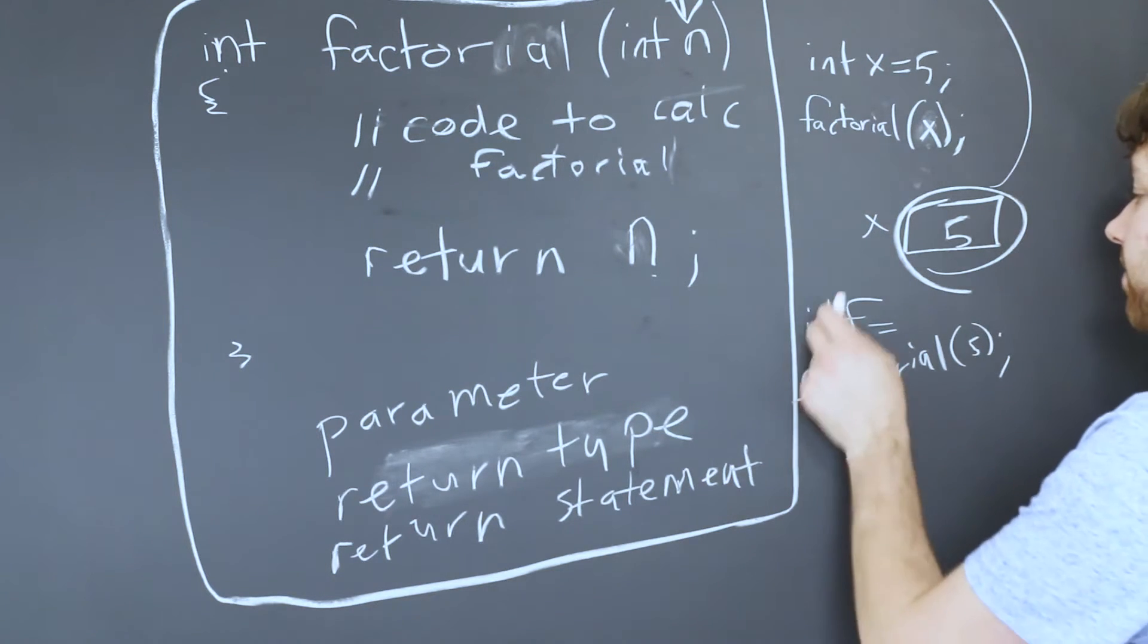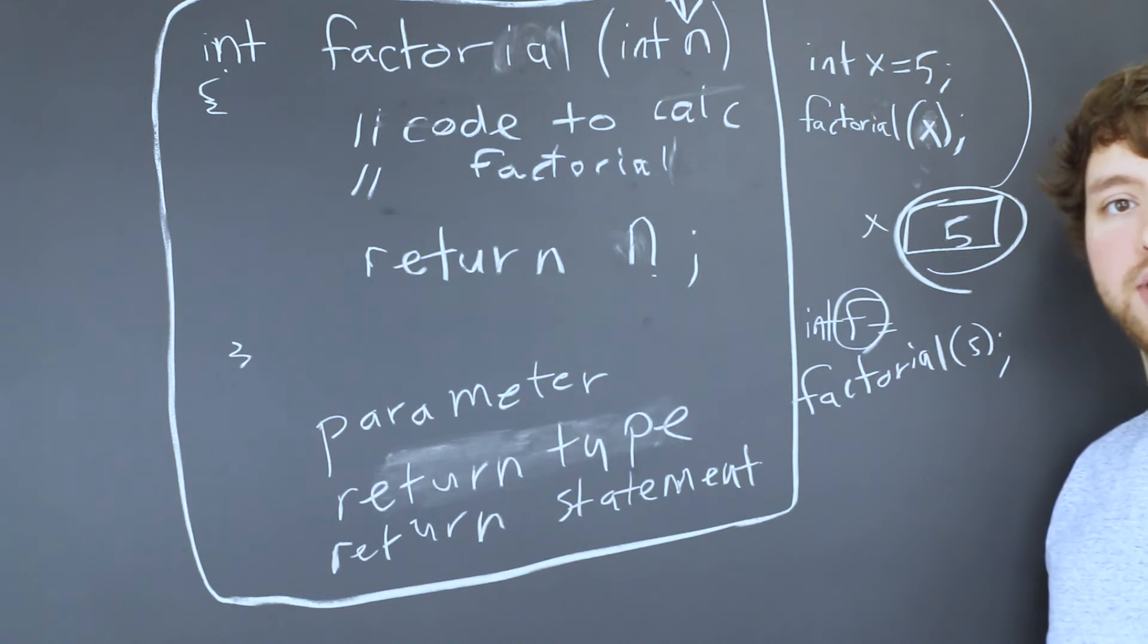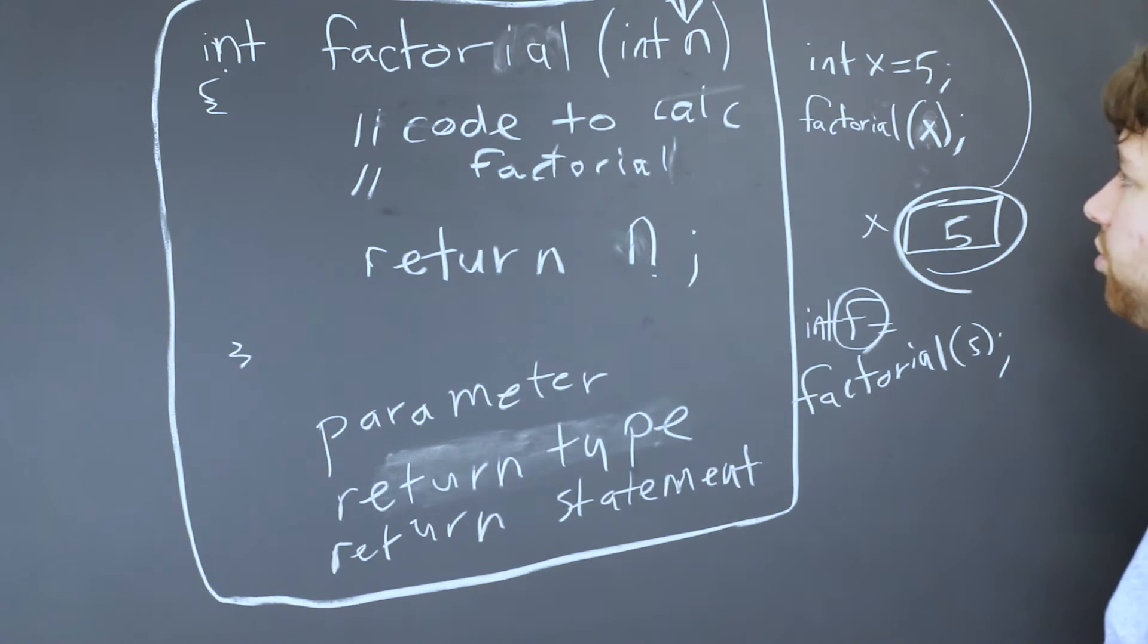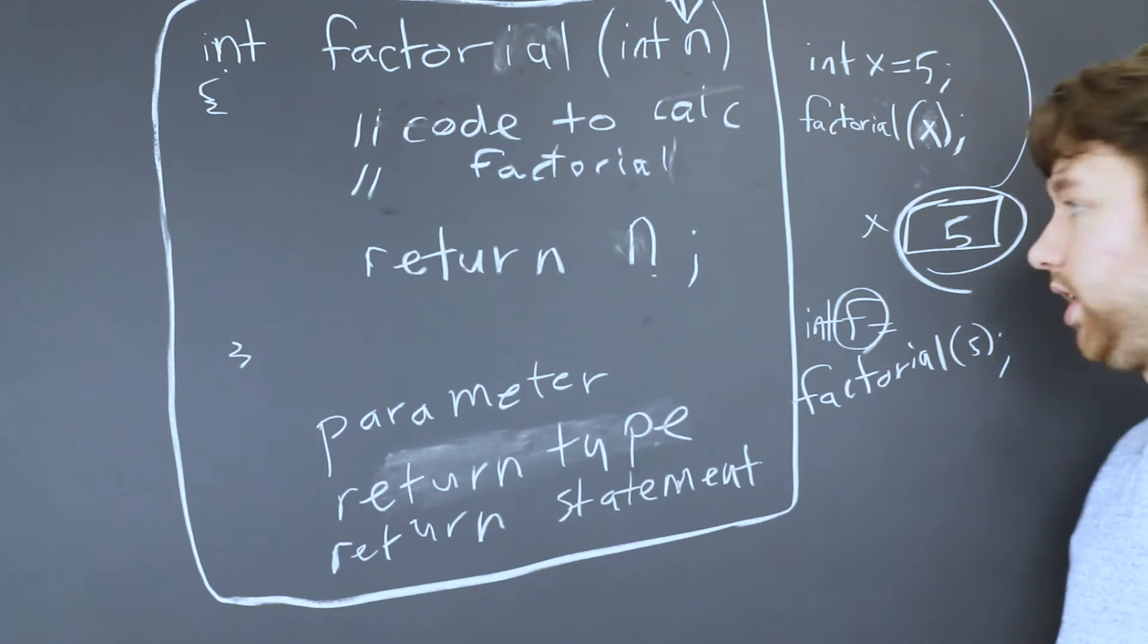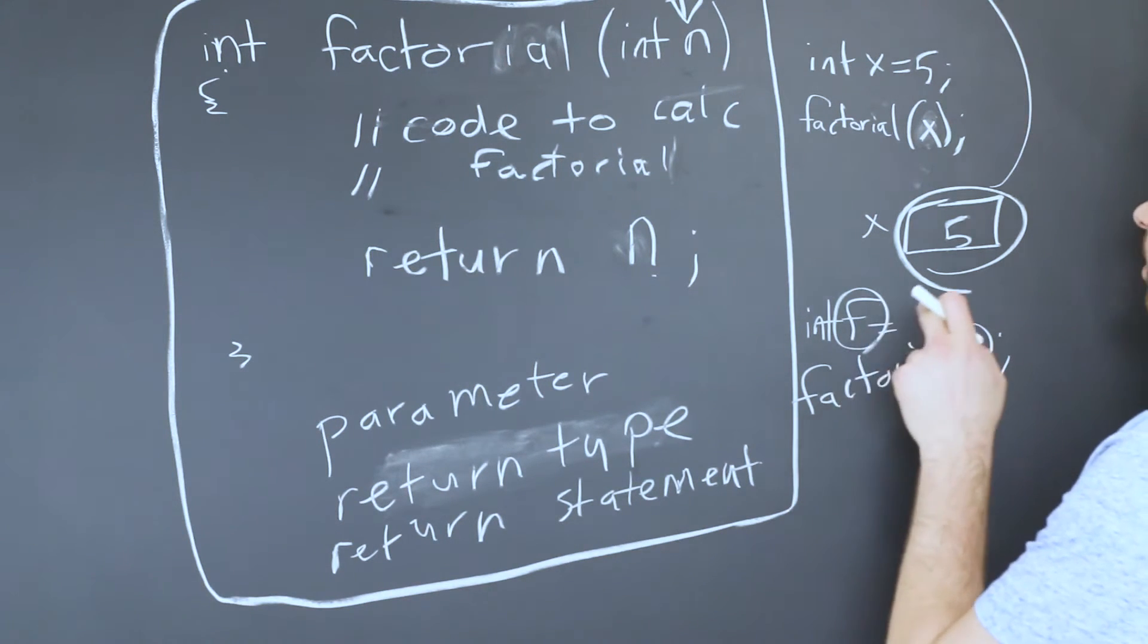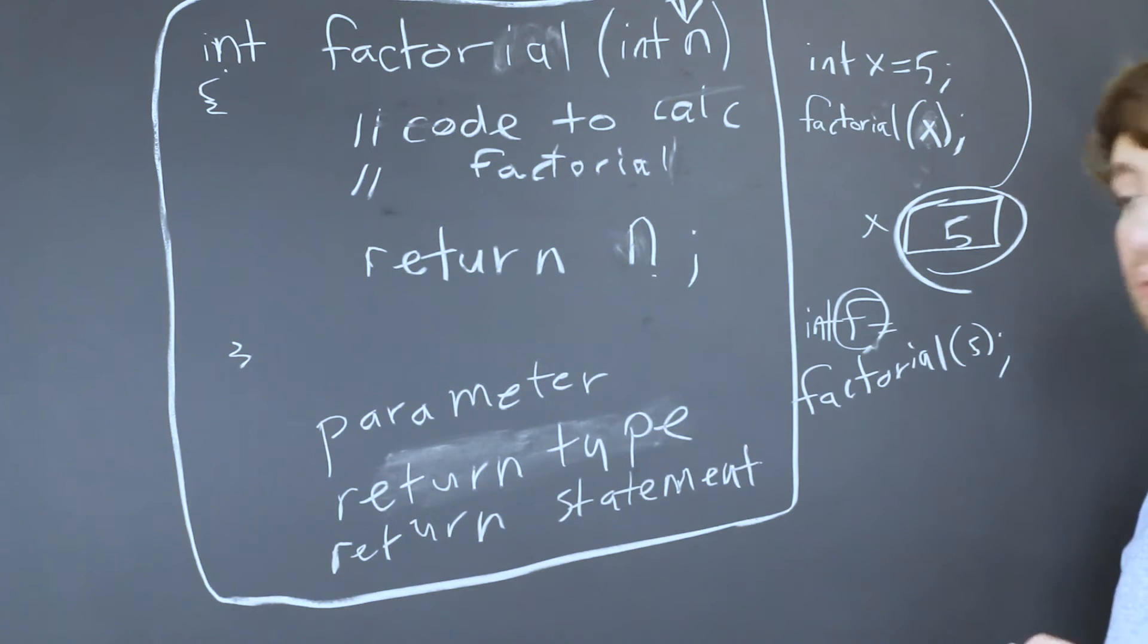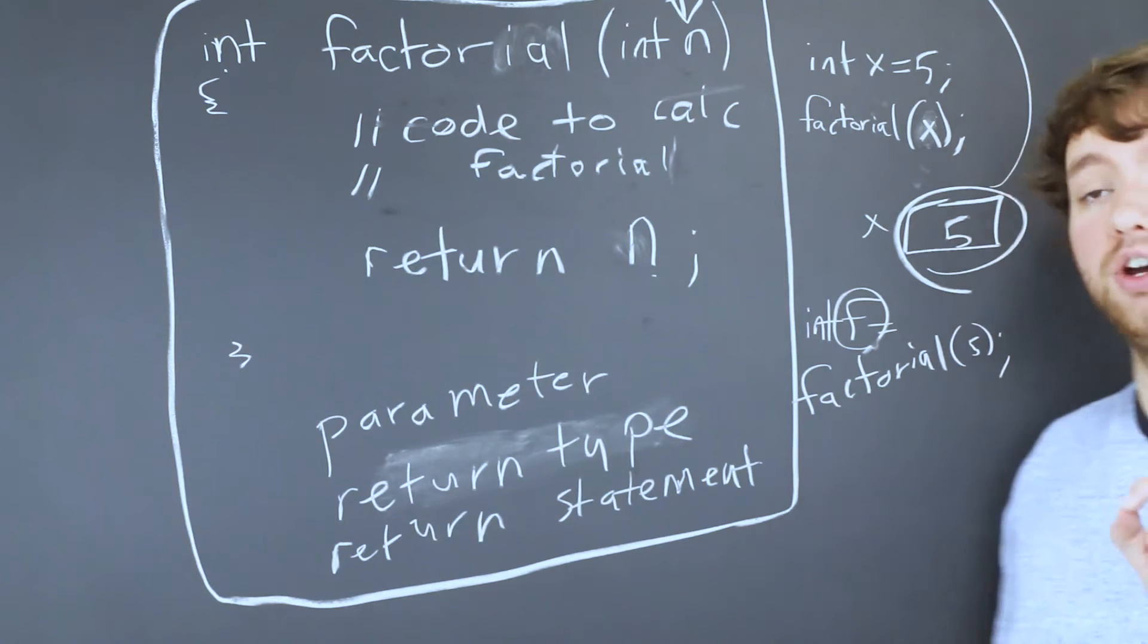Now this f is going to contain whatever the factorial of five is which would be five times four which is twenty times three which is sixty times two which is a hundred and twenty. So int f f would contain the value a hundred and twenty.